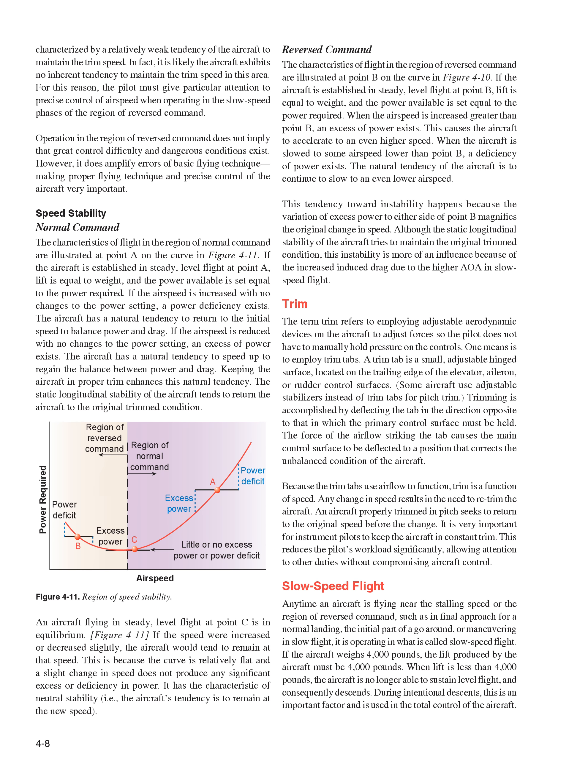Reversed Command. If the aircraft is established in steady, level flight at a point in the reversed command region, when the airspeed is increased an excessive power exists, causing the aircraft to accelerate to an even higher speed. When the aircraft is slowed below that point, a deficiency of power exists and the aircraft's natural tendency is to continue to slow to an even lower airspeed. This tendency toward instability happens because the variation of excess power to either side of the equilibrium point magnifies the original change in speed. Although the static longitudinal stability of the aircraft tries to maintain the trimmed condition, this instability is more of an influence because of the increased induced drag due to the higher AOA in slow-speed flight.